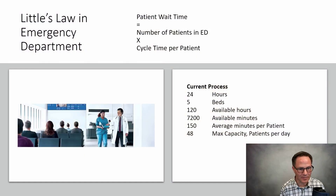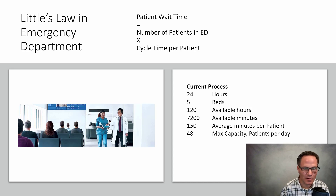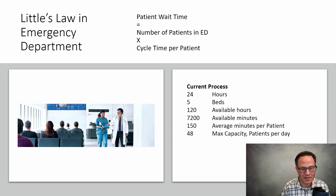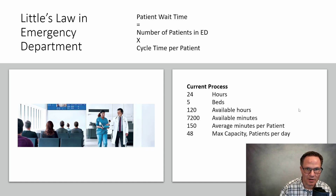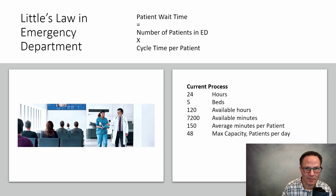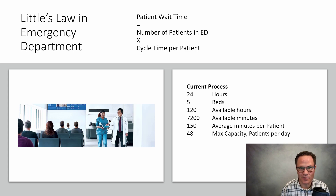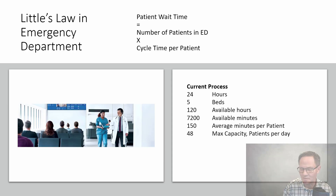Little's Law is a formula for calculating how much inventory you need based on cycle time, or what your cycle time needs to be based on your demand. Patient wait time equals the number of patients in the emergency department times the cycle time per patient. With 24 hours in a day and five beds, that's 7,200 available minutes. At 150 minutes average per patient, max capacity would be about 48 patients per day. If your demand is 100 patients per day, you're in trouble.